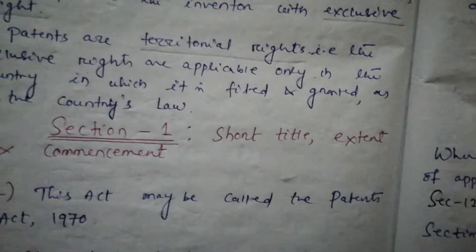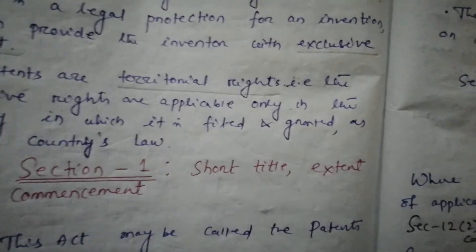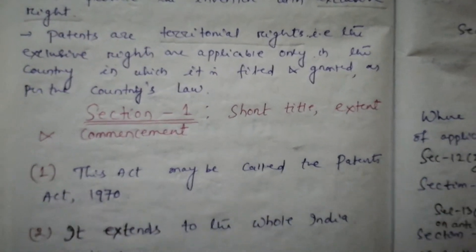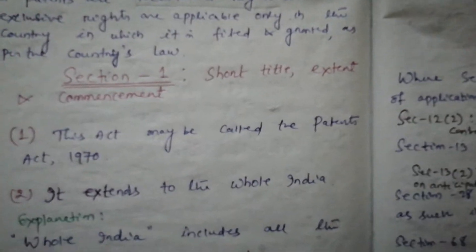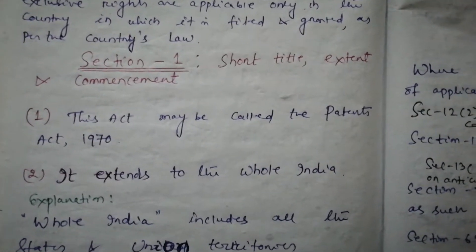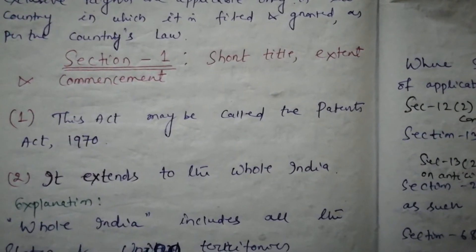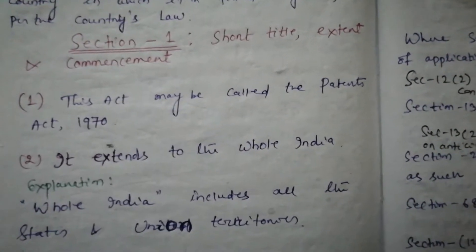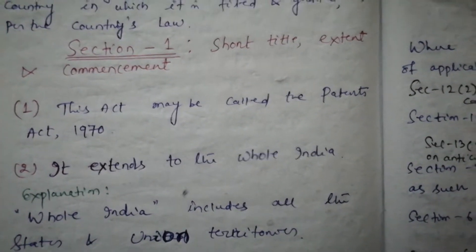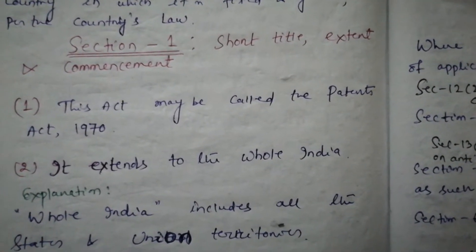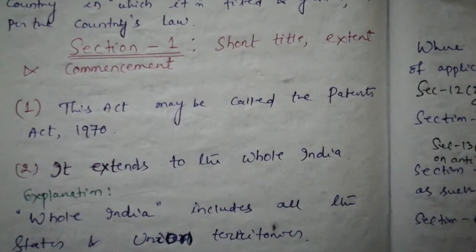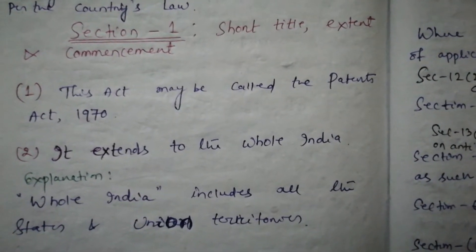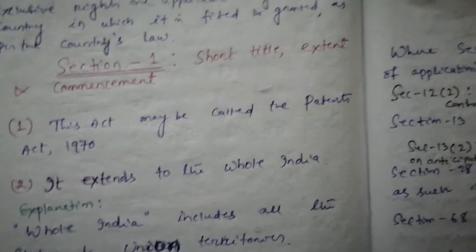Now we will proceed with Section 1. The title is 'Short Title, Extent and Commencement.' Subsection 1 says: this act may be called the Patents Act 1970. Subsection 2 says: it extends to the whole of India, which includes all the states and union territories.